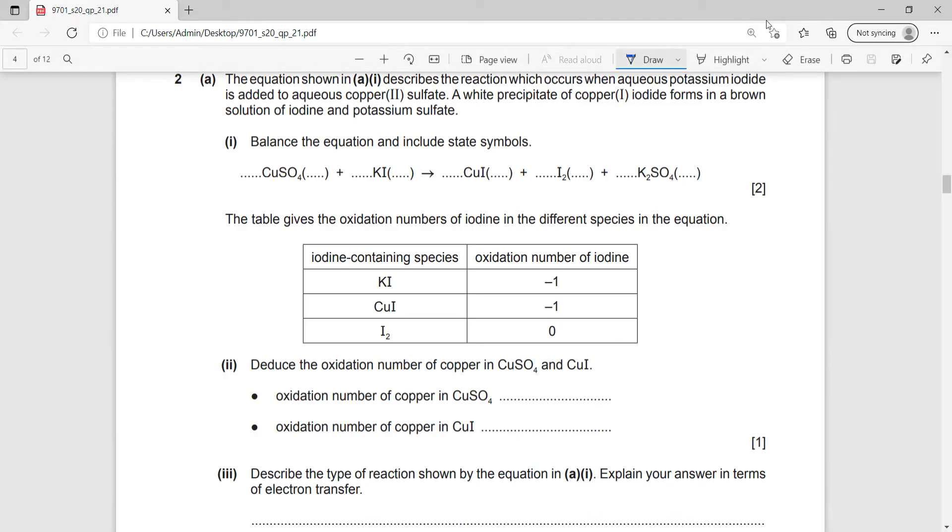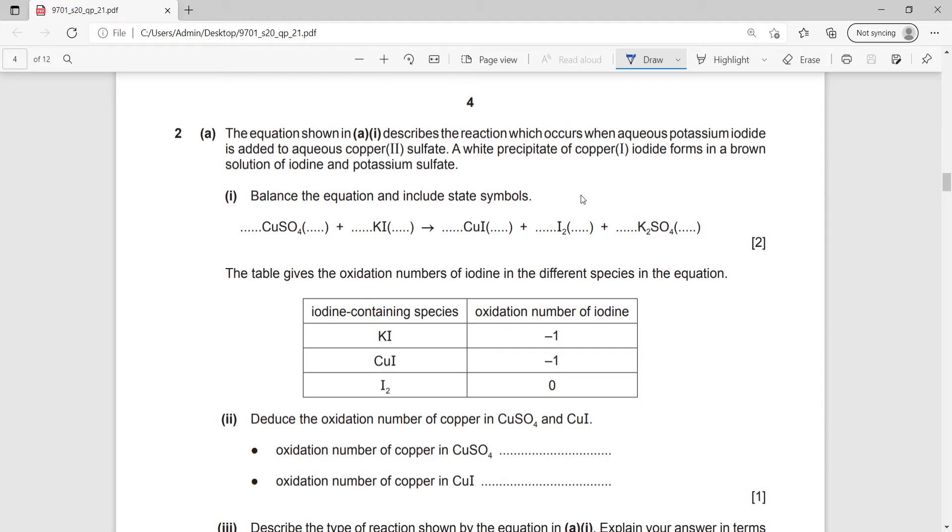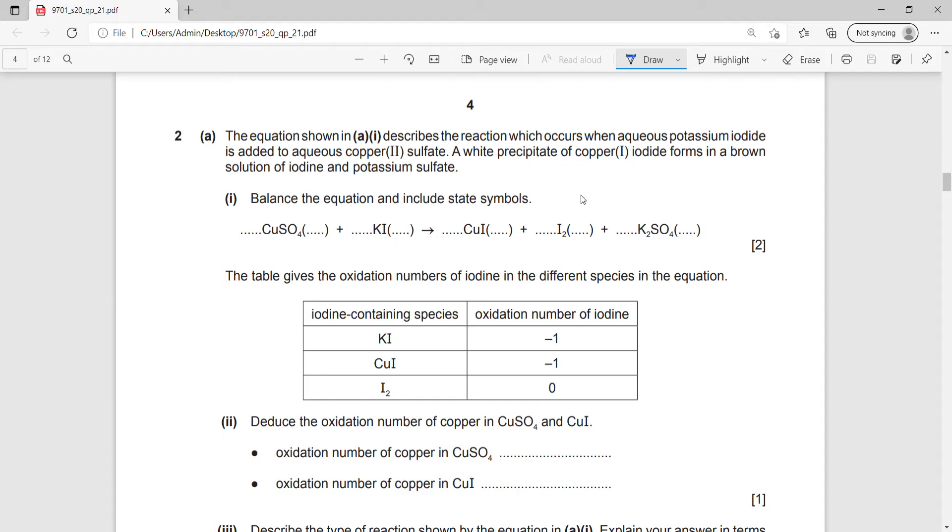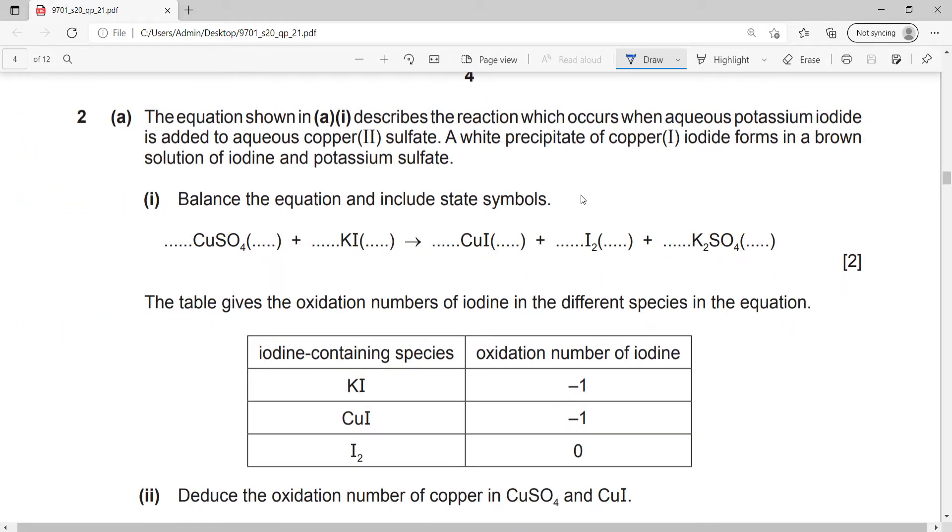The first part of this question is a balancing question, which can be balanced by inspection or by the redox method or the oxidation number method. Since it's easy, I'll just be balancing it directly. The equation describes the reaction which occurs when aqueous potassium iodide is added to aqueous copper sulfate. You have to know that the state symbols for copper sulfate and potassium iodide are both aqueous. A white precipitate of copper(I) iodide forms, so it's a solid. And iodine and potassium sulfate are in a brown solution, so their states are aqueous.